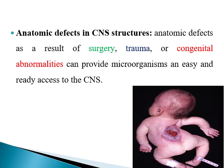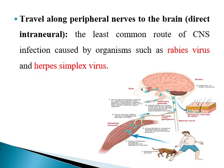Another route is through anatomic defects in CNS structure. This can result from surgery, from trauma, or sometimes from congenital abnormalities, as demonstrated in this photo. Finally, the organism can travel along peripheral nerves in order to reach the CNS, in what we call direct intraneural spread.